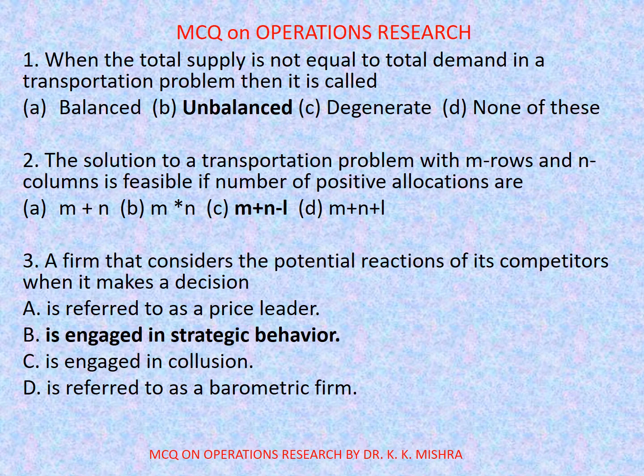Question number 2: The solution to a transportation problem with m rows and n columns is feasible if the number of positive allocations are — options are: a) m plus 1, b) m cross 1, c) m plus n minus 1, d) m plus n plus 1. Correct option is c) m plus n minus 1.